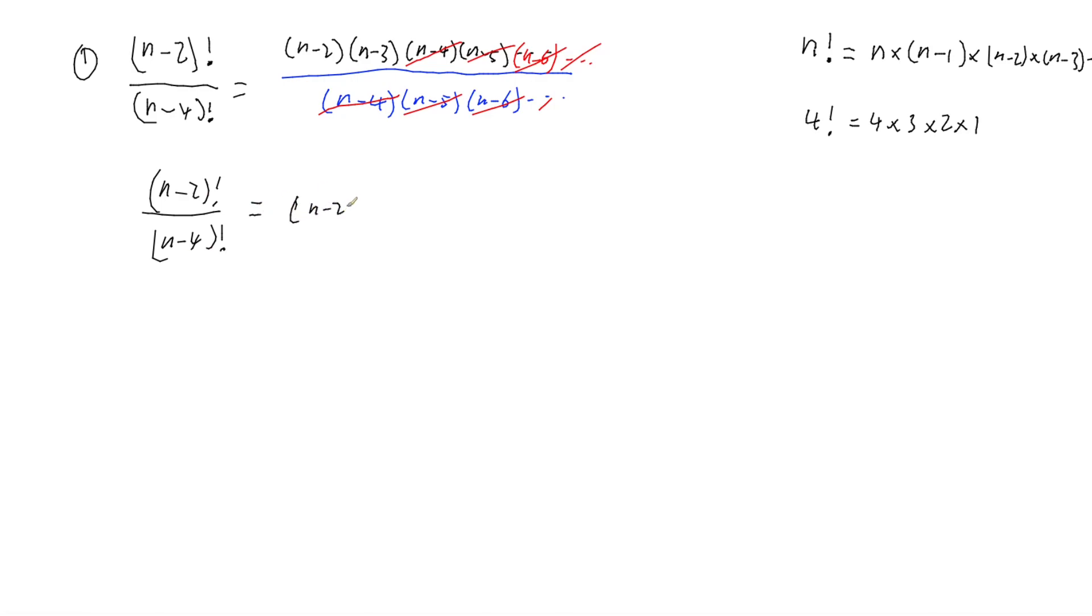That means all I'm left with for (n-2)! divided by (n-4)! is just (n-2) times (n-3), and that's where we would leave it. If I knew what n was, I could work it out. Maybe if I had another side to the equation, I might be interested in doing some algebra to find n, but for now that's where we're leaving it. Let's look at a second one.